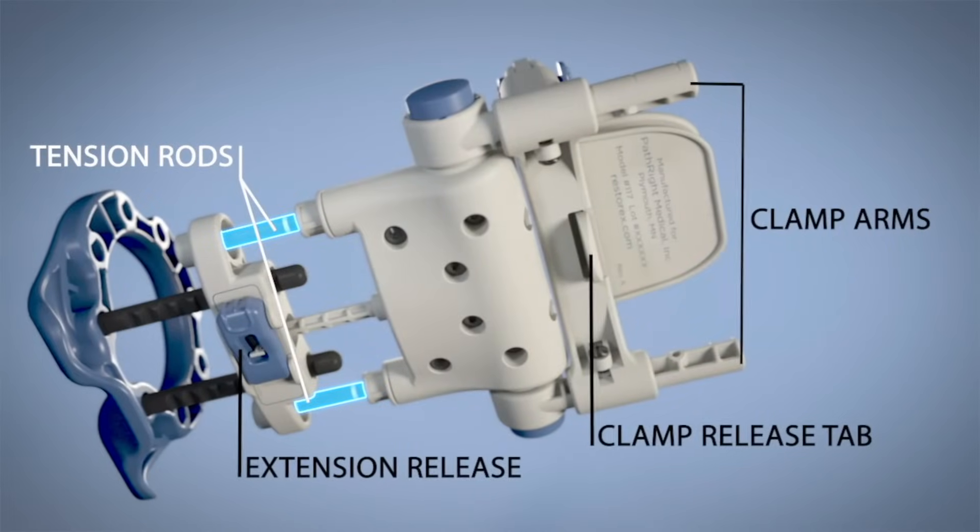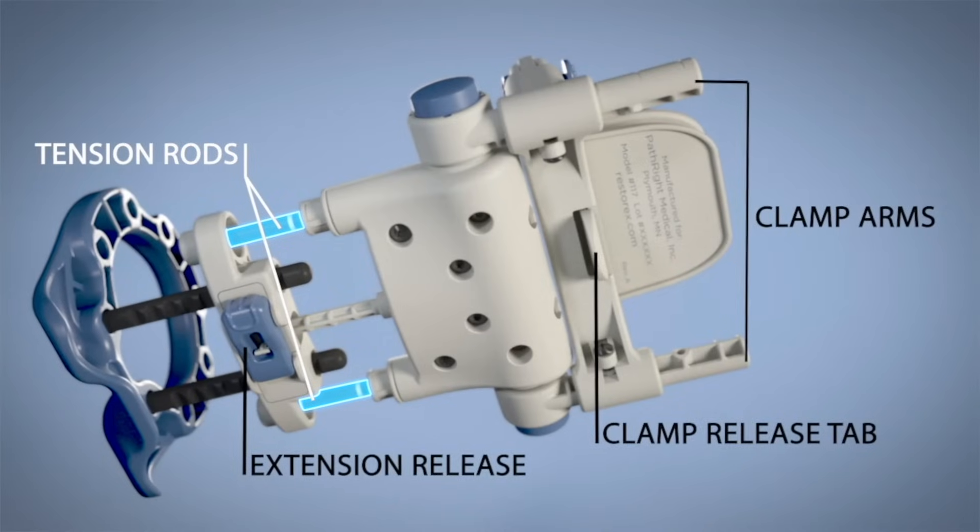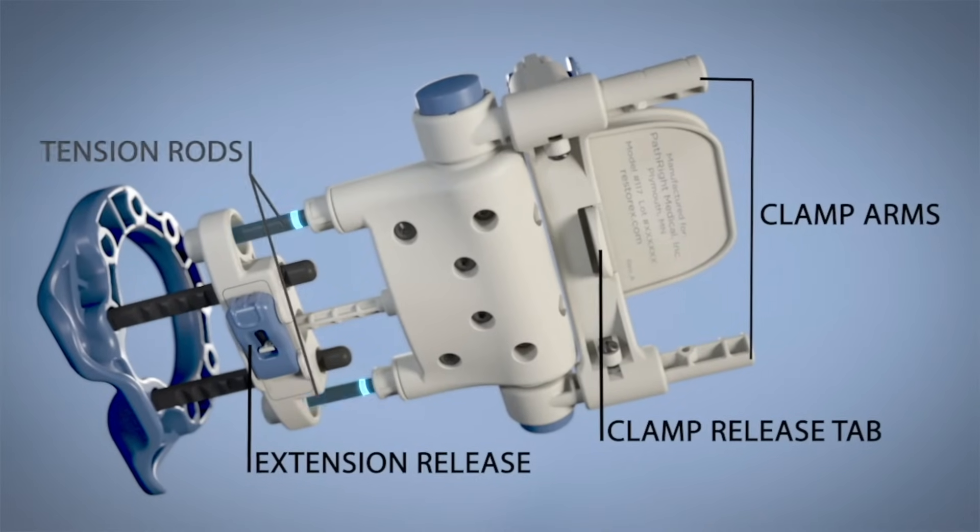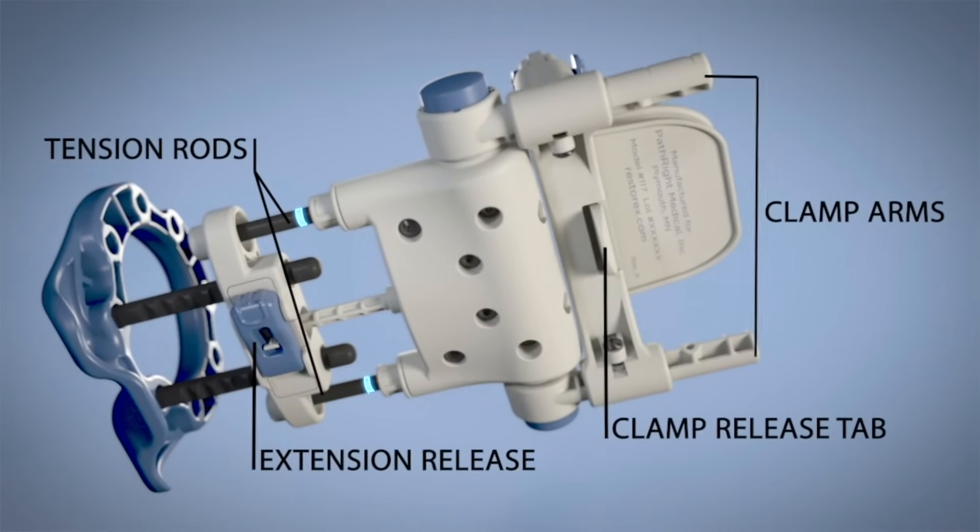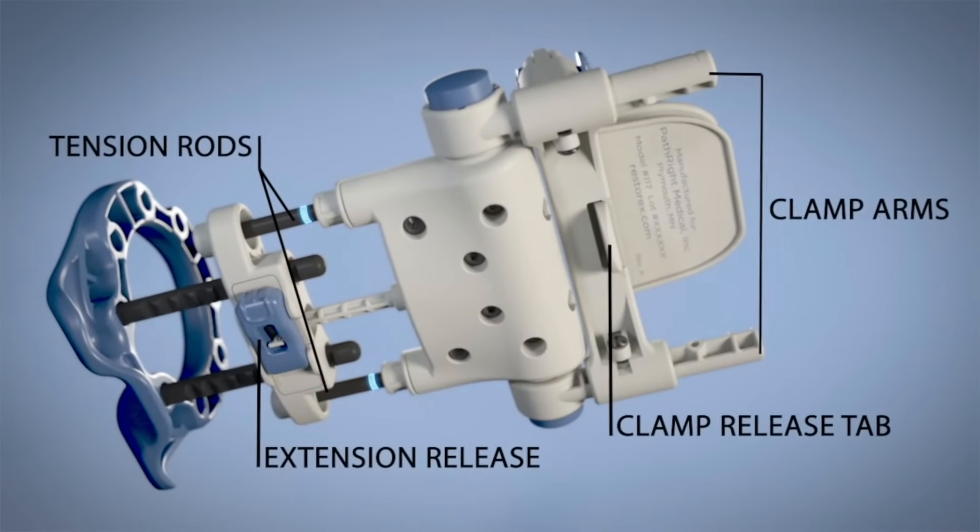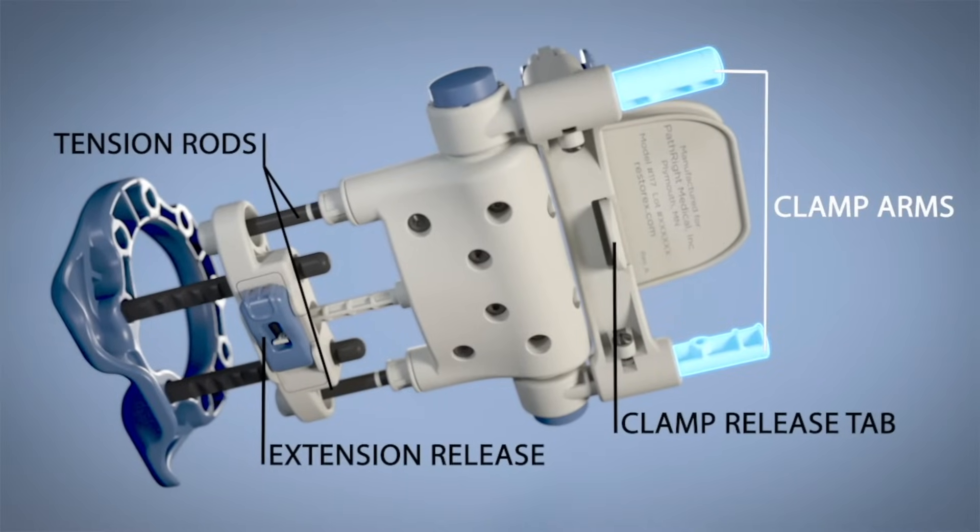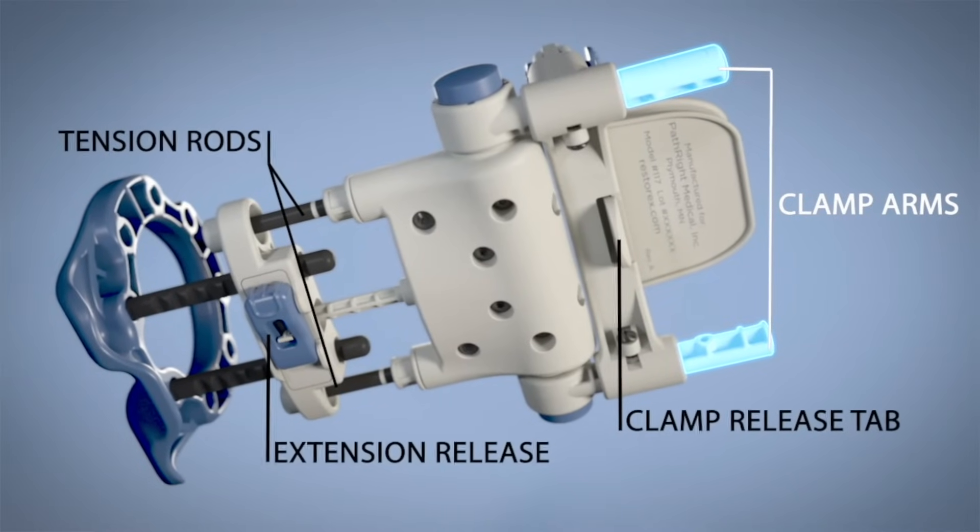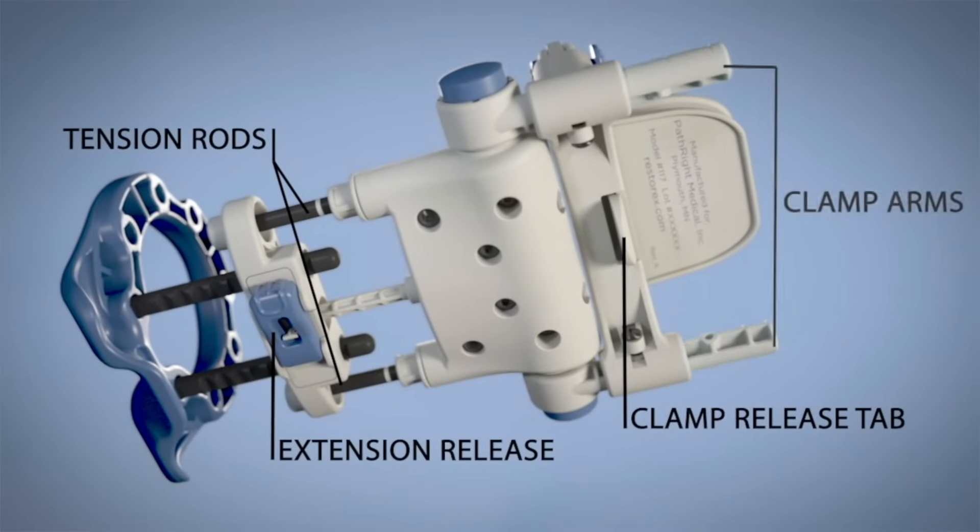The spring-loaded tension rods provide the resistance to achieve traction. The white band on each tension rod tells you when you have achieved the minimum tension level. The clamp arms are used to adjust Restorex for the distance from the tip of your penis to the Peyronie's curvature.